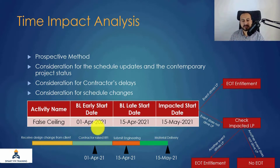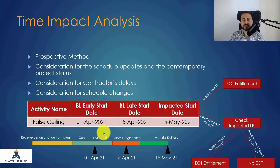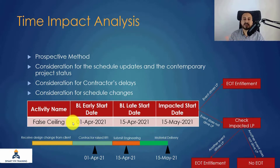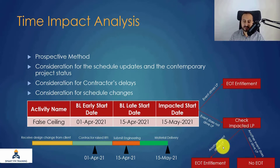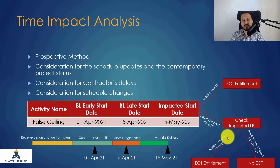Perhaps the event related to MEP is driving the longest path. So I have negative float from the false ceiling event, but it is not driving the project completion — the MEP event is. After inserting the event and checking the impacted longest path, if another event is driving the longest path, there is still EOT entitlement — because in this case the impact comes from the MEP event.